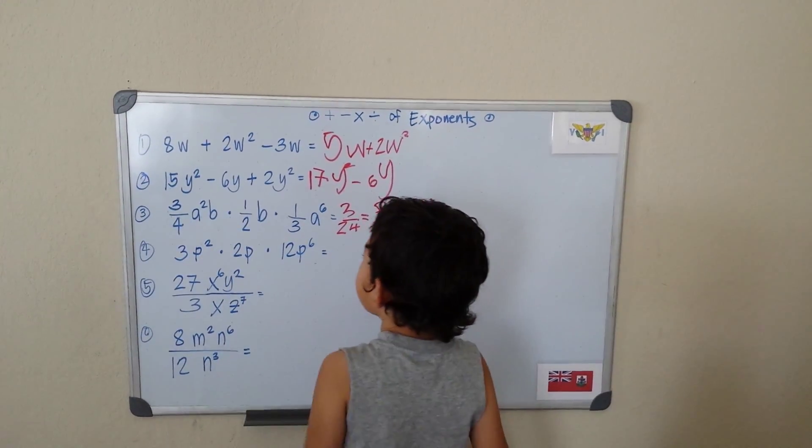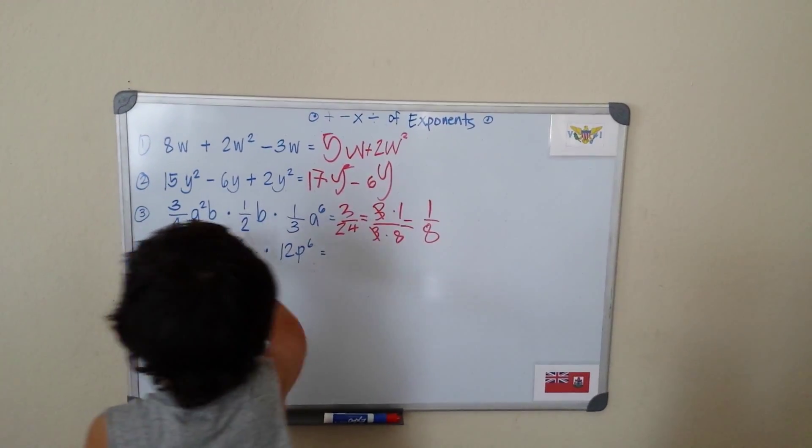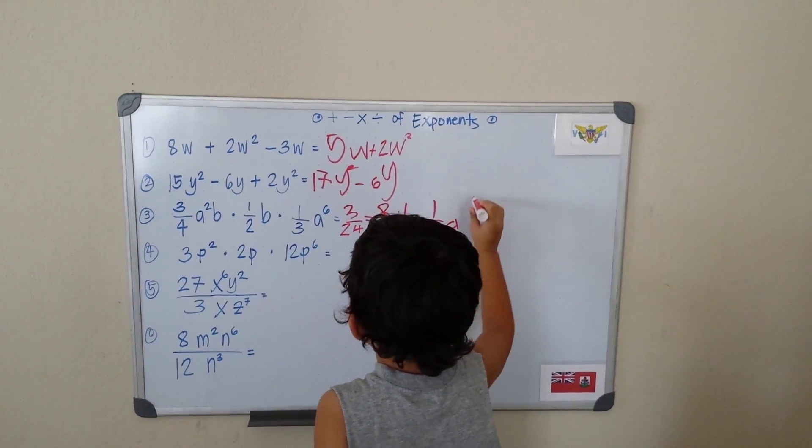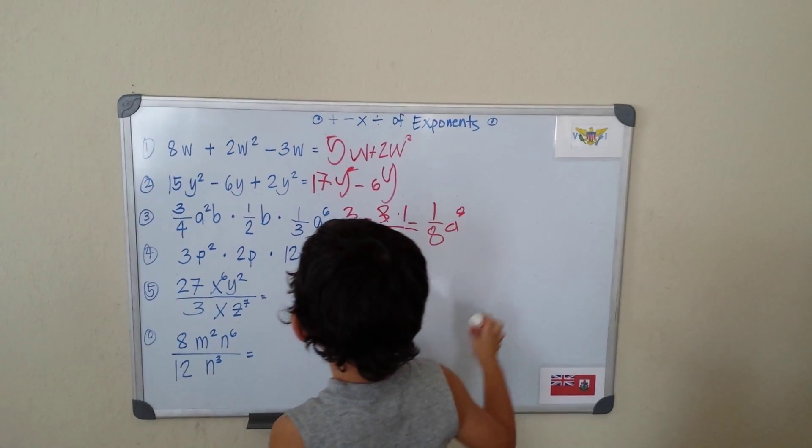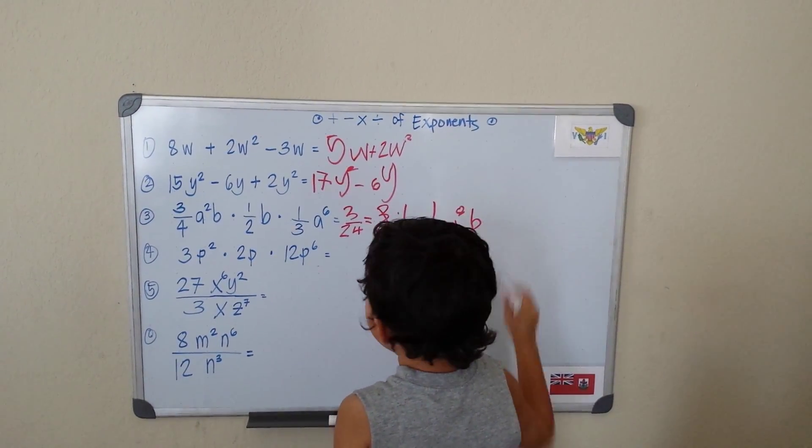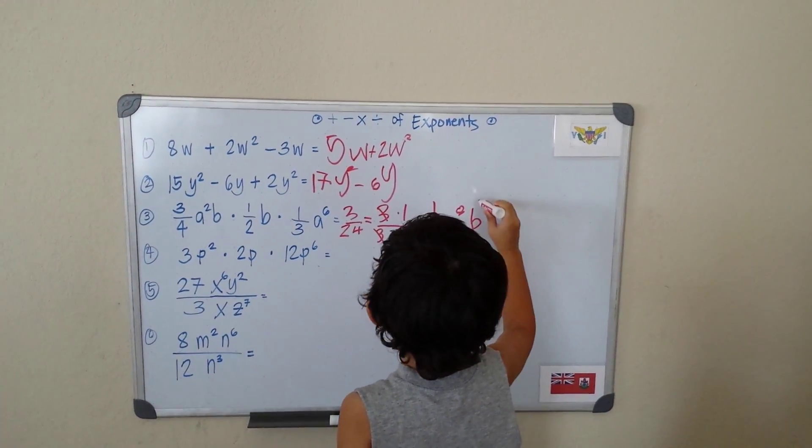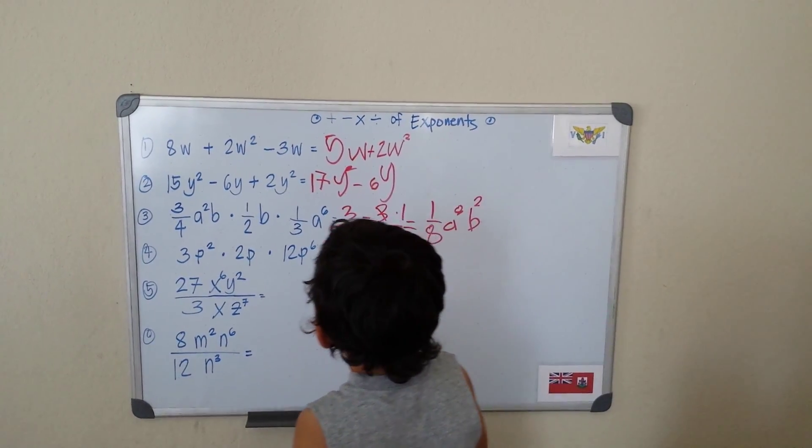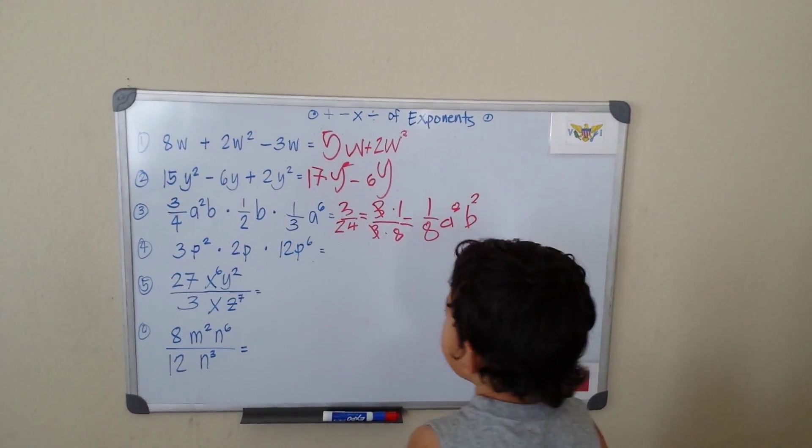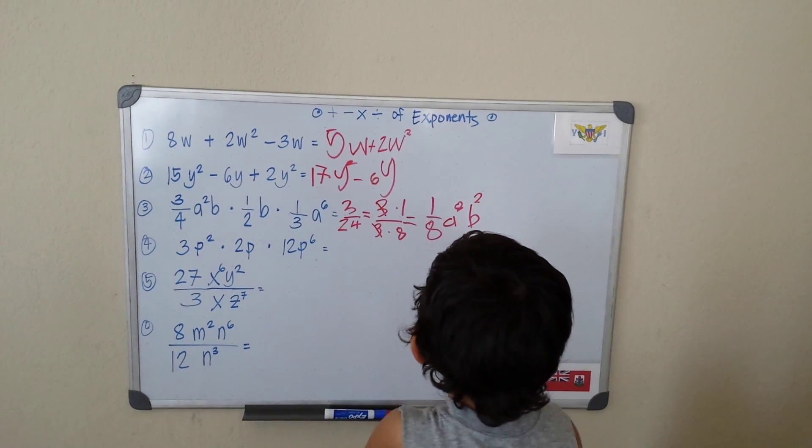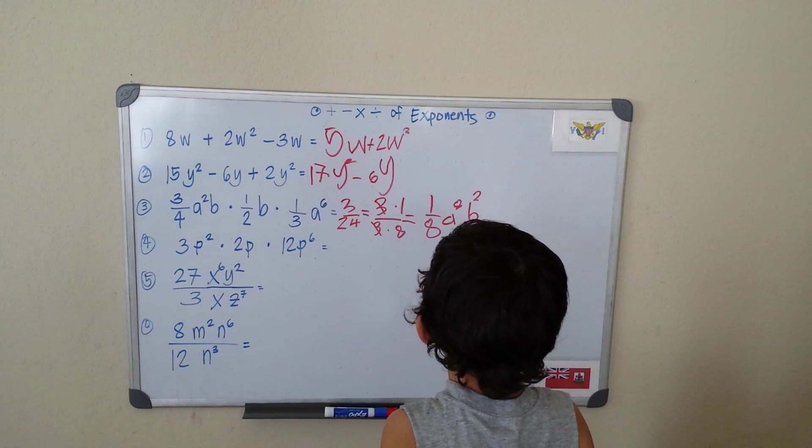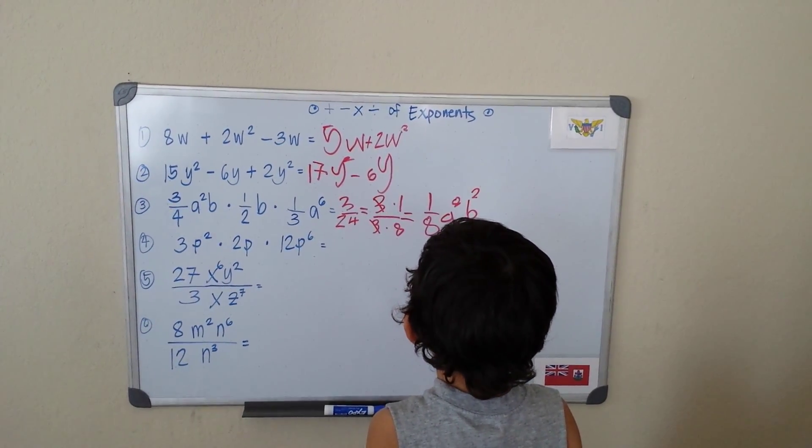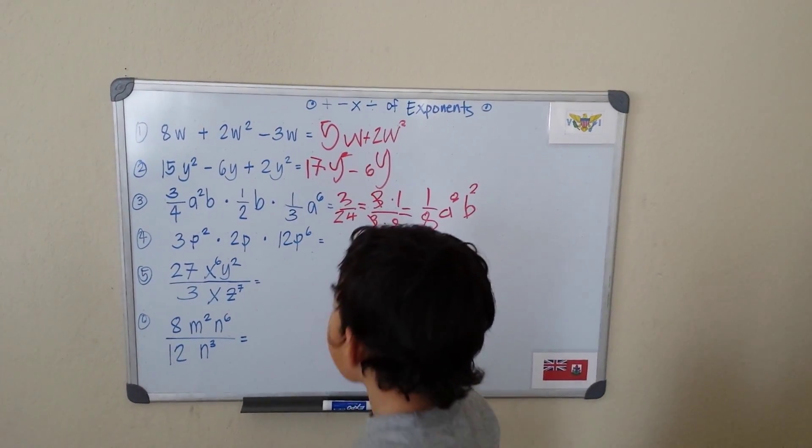Now let's get to A and B. A raised to the 8th power, and also B raised to the 2nd power, or squared. So my final answer is 1 over 8, A raised to the 8th power, B squared. That's my final answer.